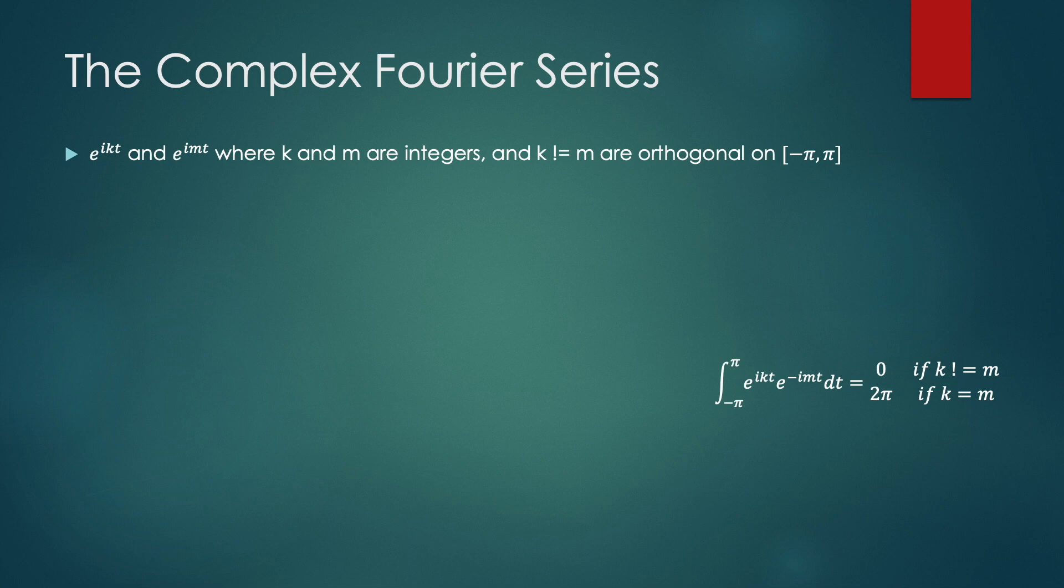And if you want to see, again, why this proof of the e to the i kt and e to the imt being orthogonal to each other when k does not equal m, you can find that online. It's not too difficult. And then, again, when k equals m, we get 2π.